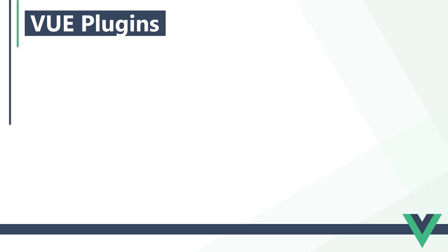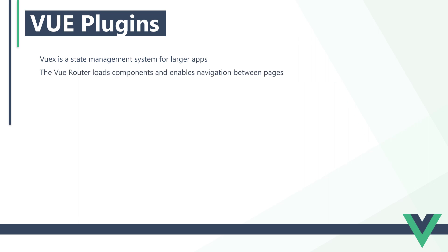As we mentioned earlier, Vue's functionality can be extended with additional APIs, typically referred to as plugins. These are only added to an application if they're needed, and work with both the options and composition APIs. A few examples would be: VueX, as a state management system for larger apps; the Vue router, which helps us load components and navigate between pages; and the Vue test utilities, that help us test our components and applications.